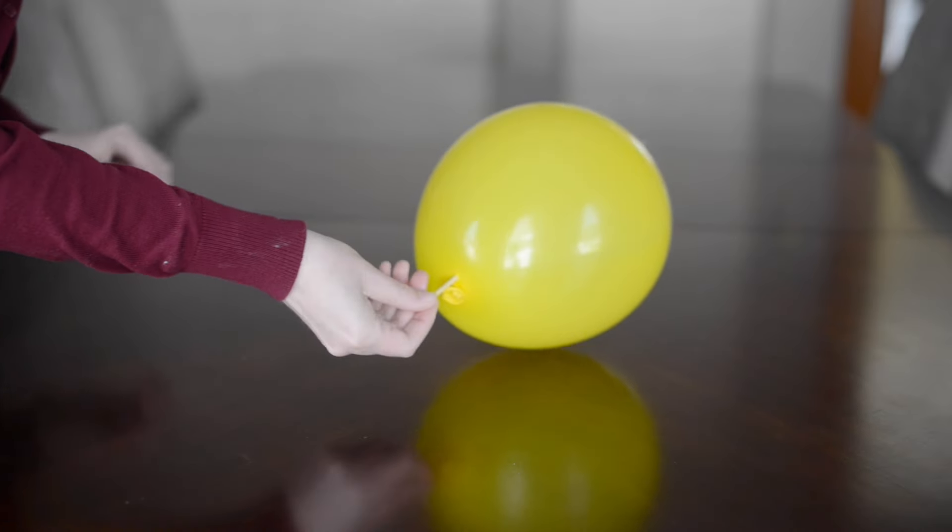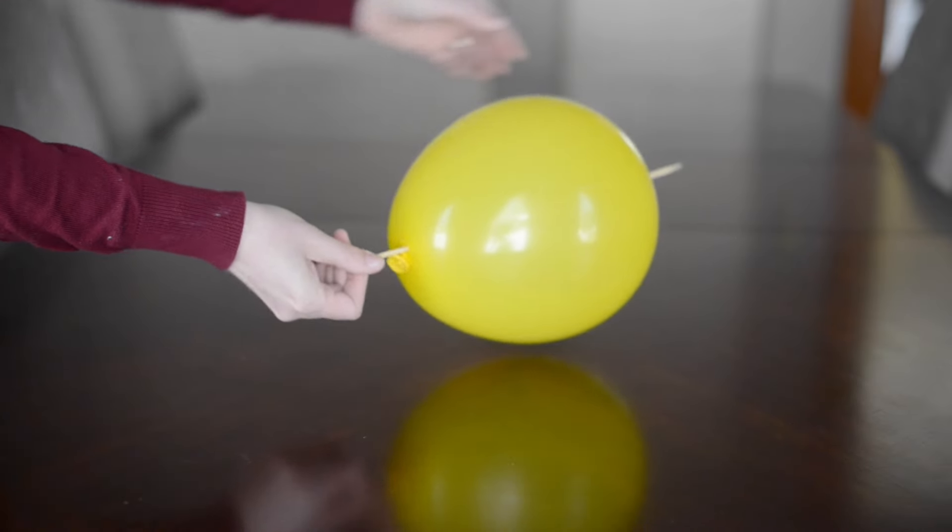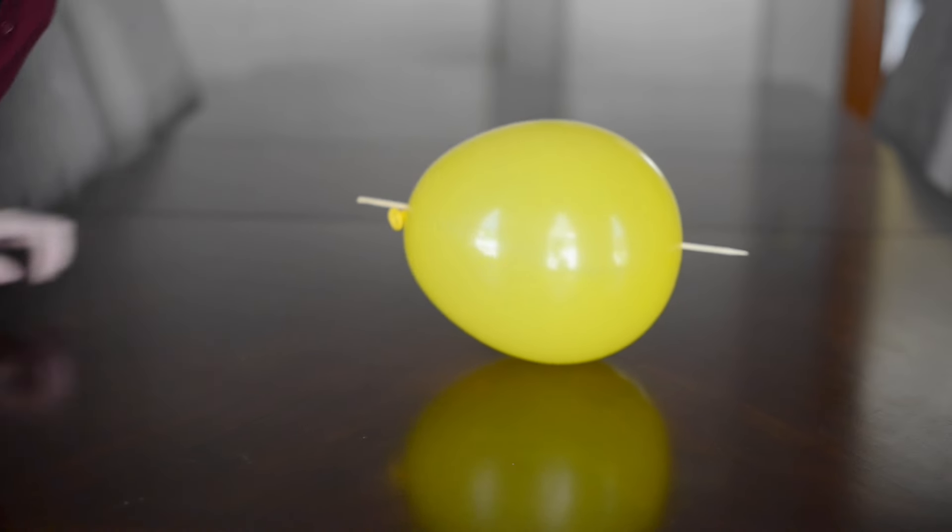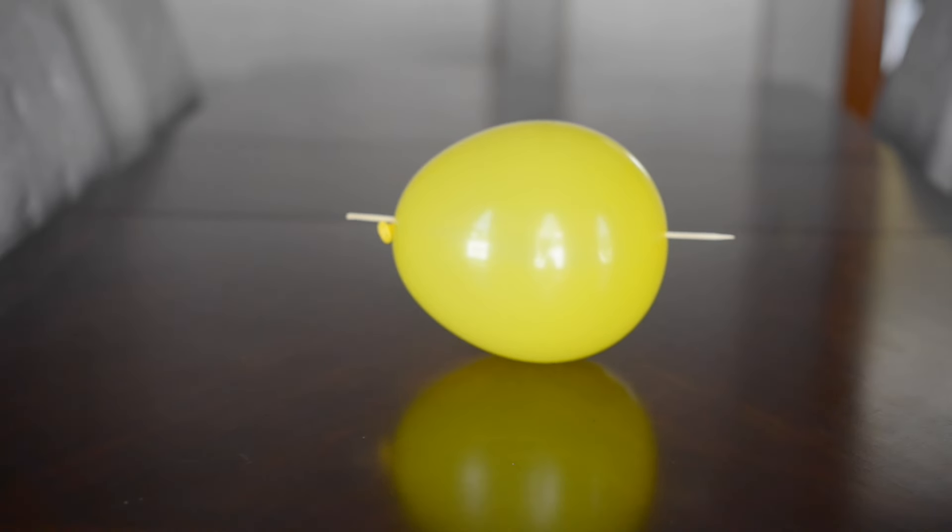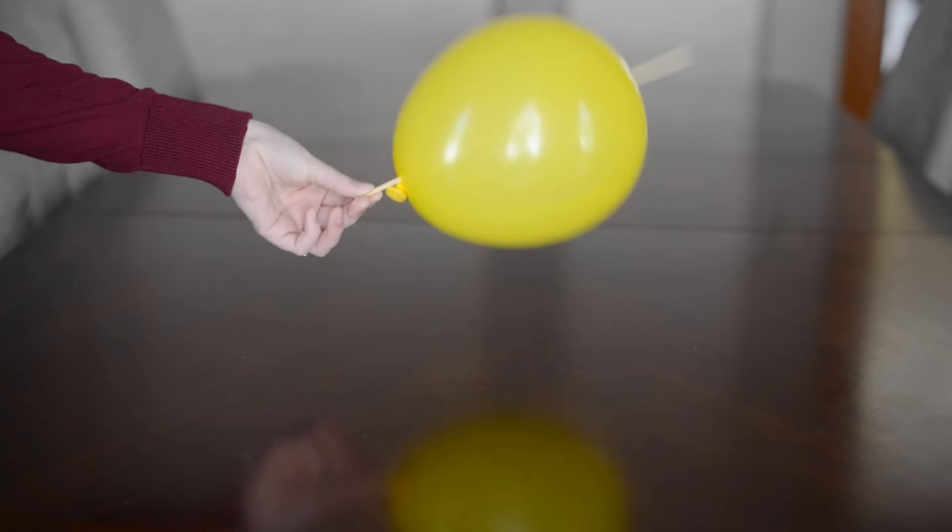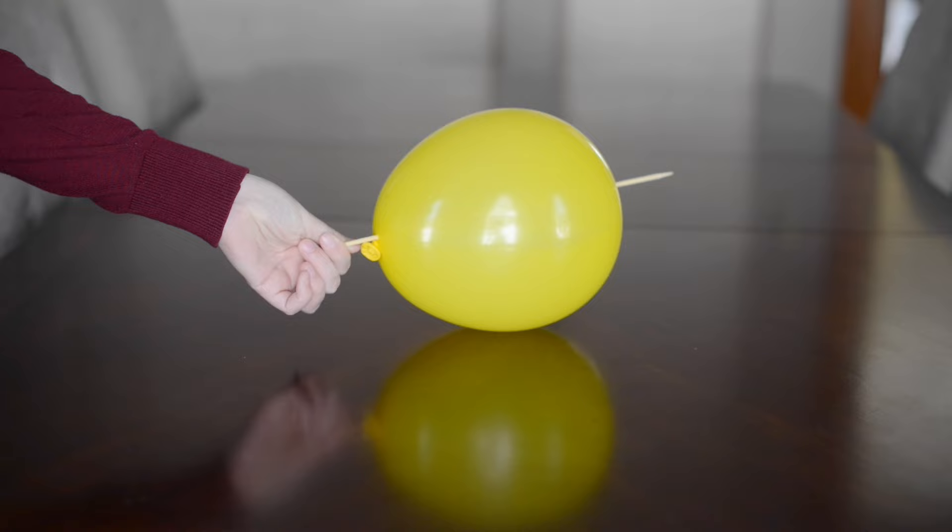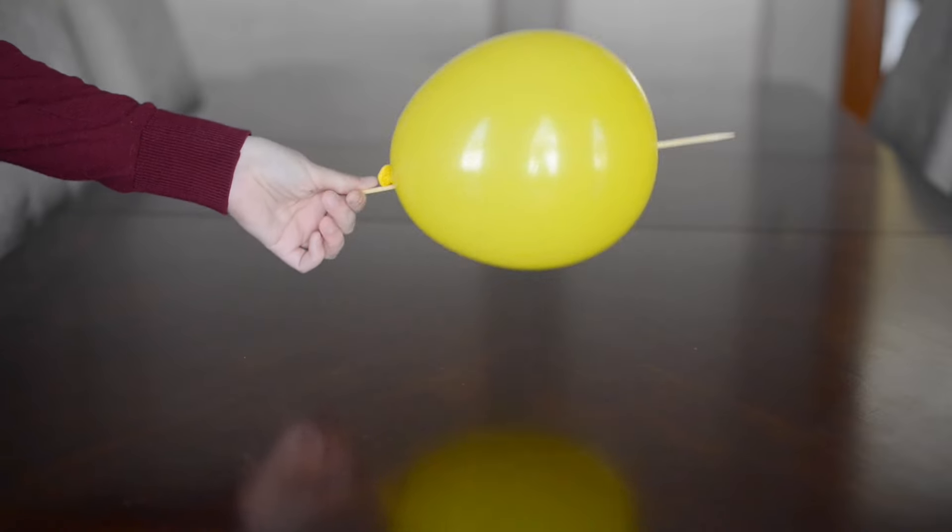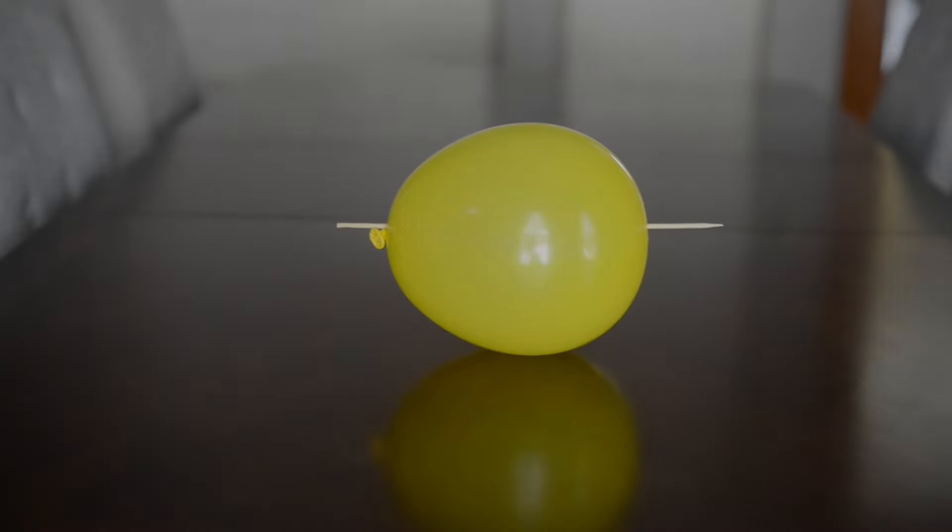And that is because the polymer chains in the balloon are pushed aside but the bond remains so the balloon doesn't pop. It's easier to push the skewer in at the ends where the polymer strands have more give. Around the sides of the balloon, where the strands are stretched more tightly, they're more likely to pop.